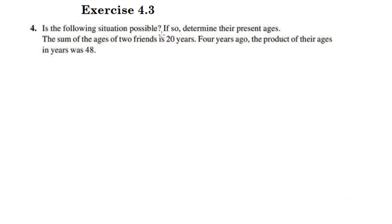Is the following situation possible? If so, determine their present ages. The sum of the ages of two friends is 20 years. Four years ago, the product of their ages in years was 48.